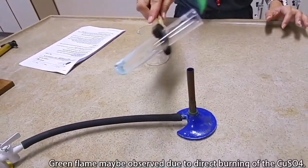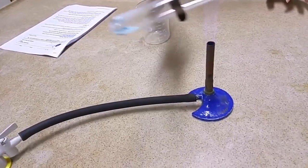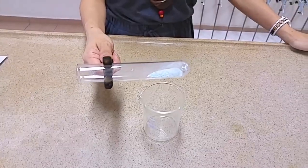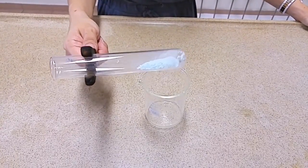This will be the final product that you'll see at the end of the heating. This is the anhydrous copper sulfate. Put it in the beaker and let it cool.